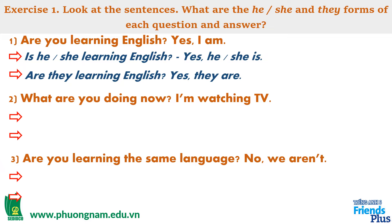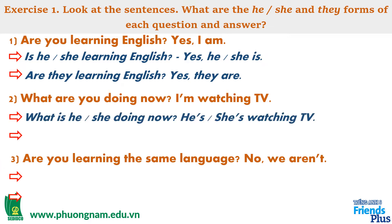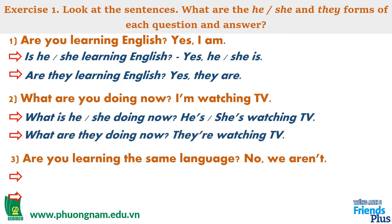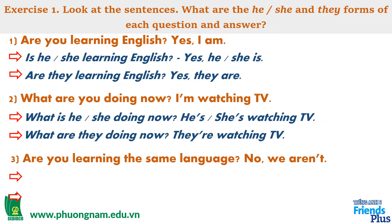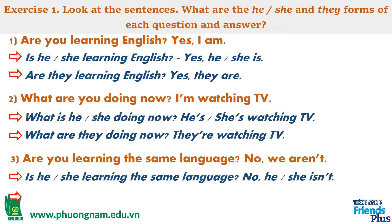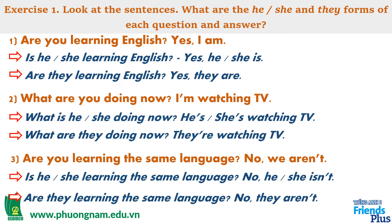Câu thứ 2: What are you doing now? I am watching TV. Khi chủ ngữ là he hoặc she: What is he or she doing now? He is / she is watching TV. Với chủ ngữ là they: What are they doing now? They are watching TV. Câu thứ 3: Are you learning the same language? No, they aren't. Với chủ ngữ là he hoặc she: Is he or she learning the same language? No, he or she isn't. Và với chủ ngữ là they: Are they learning the same language? No, they aren't.